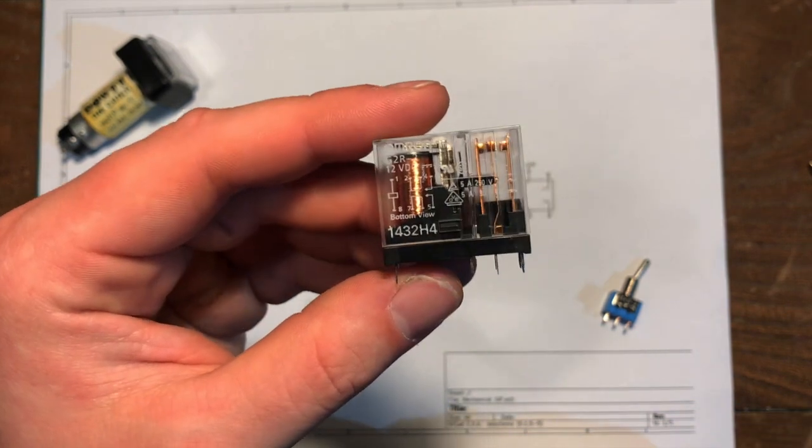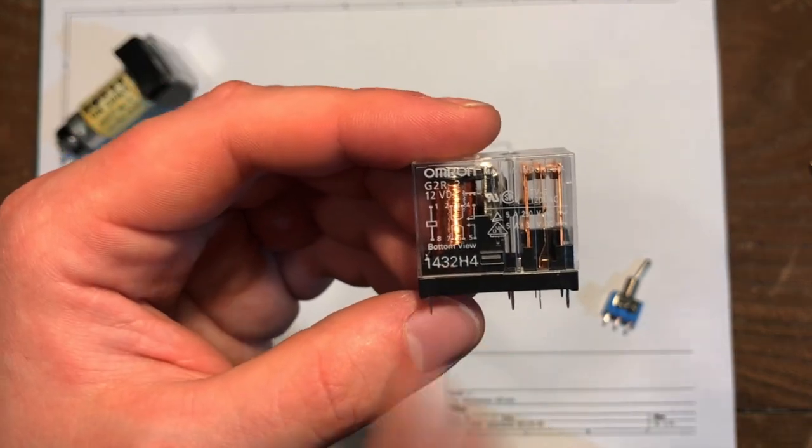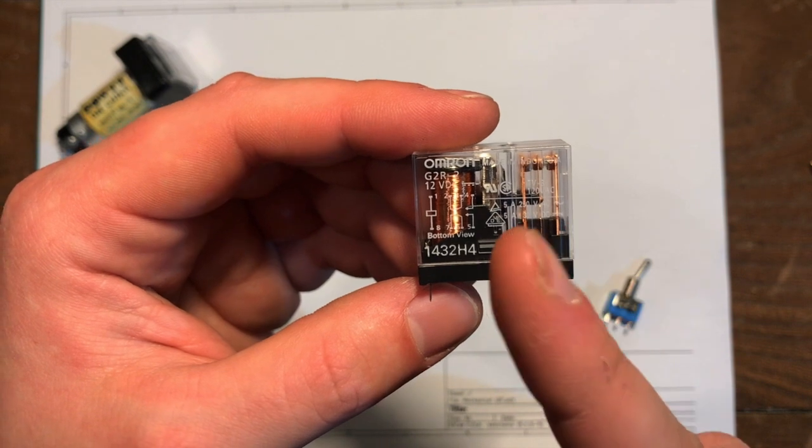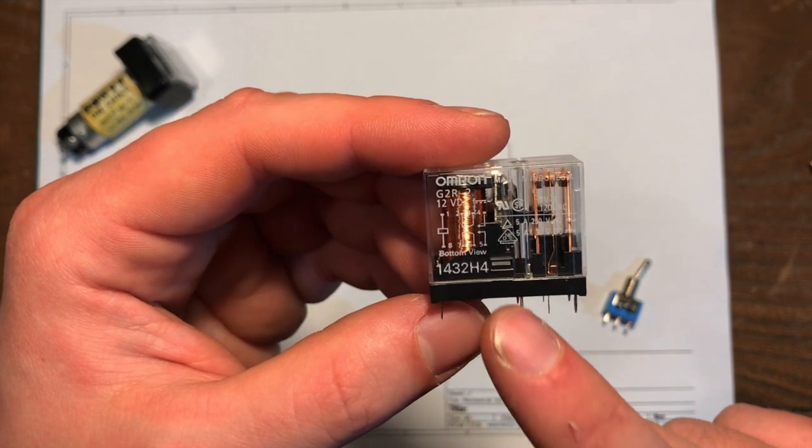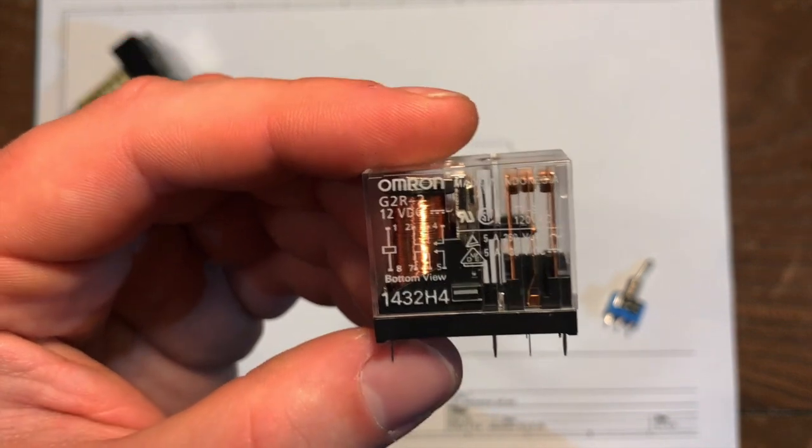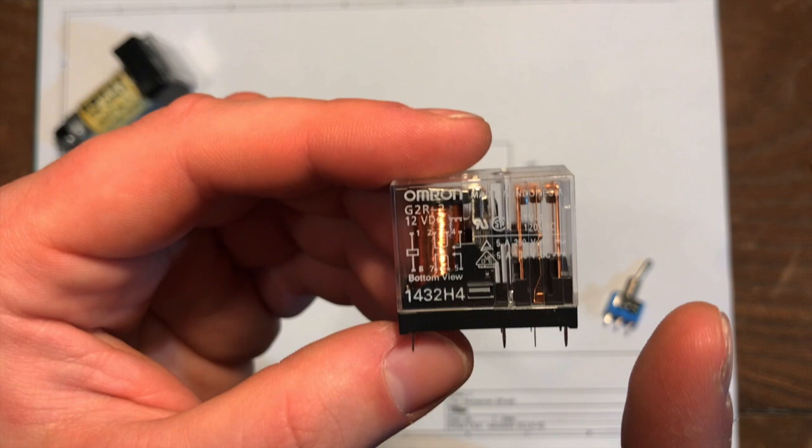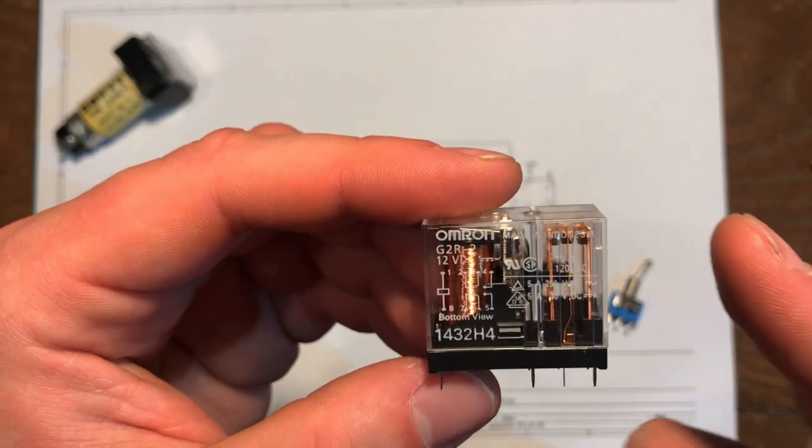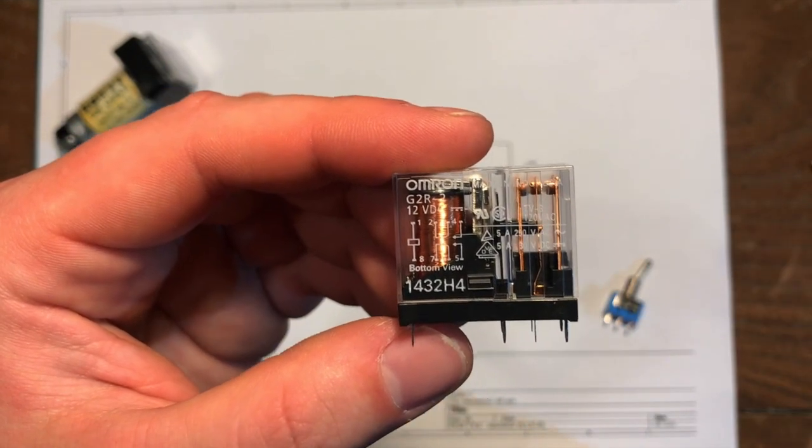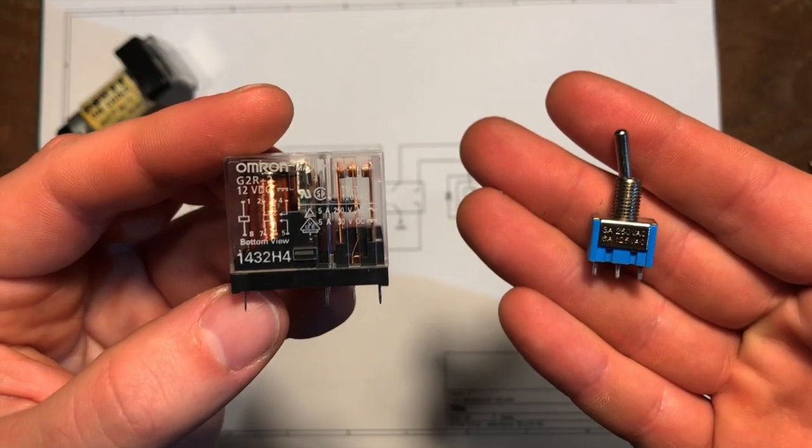So that means it's got three switch terminals which you can see coming out on the three pins here. When there's no current going into the coil the middle terminal is resting against the left side terminal in its normally closed position, and when you put a current through the coil it switches across and touches the right side terminal which comes out through this pin, and that's its normally open.